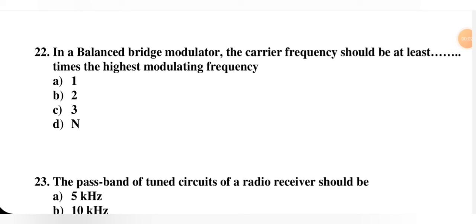Next question: in a balanced bridge modulator, the carrier frequency should be at least how many times the highest modulating frequency — one, two, three, or n? The right option is two — it should be at least double the modulating frequency; it can be higher.